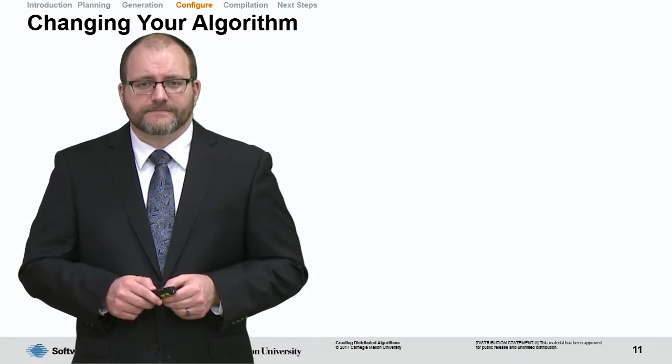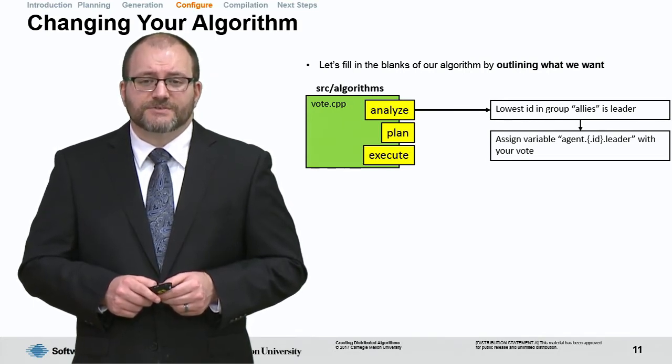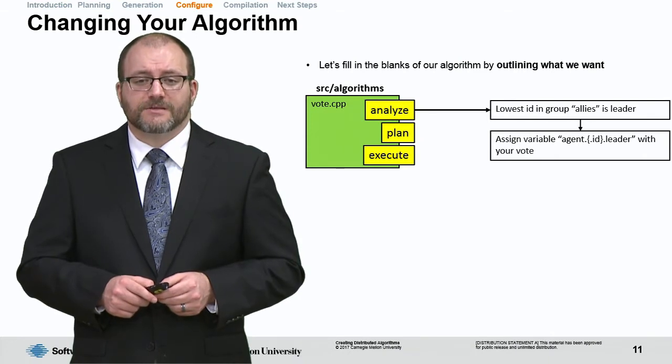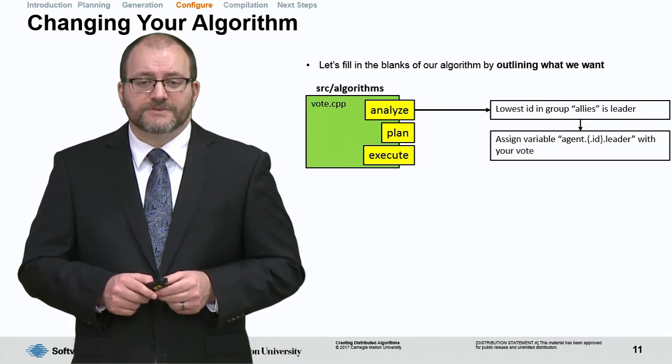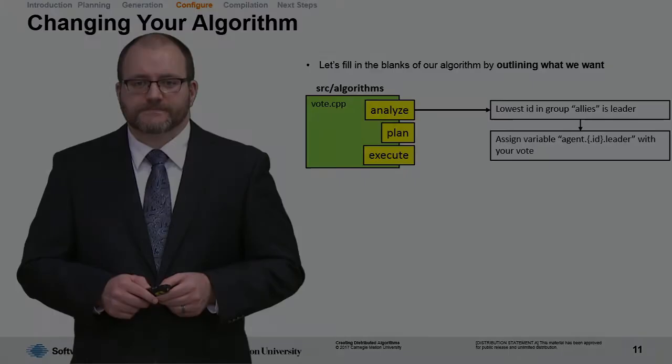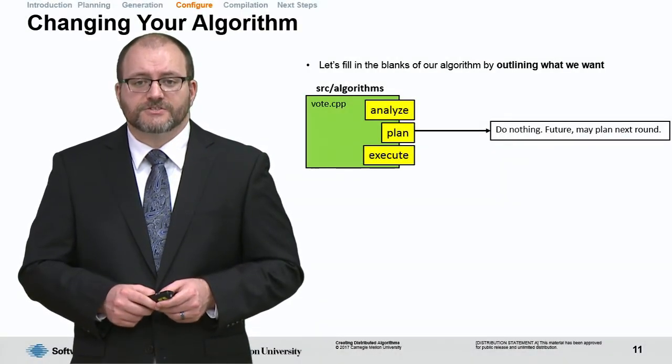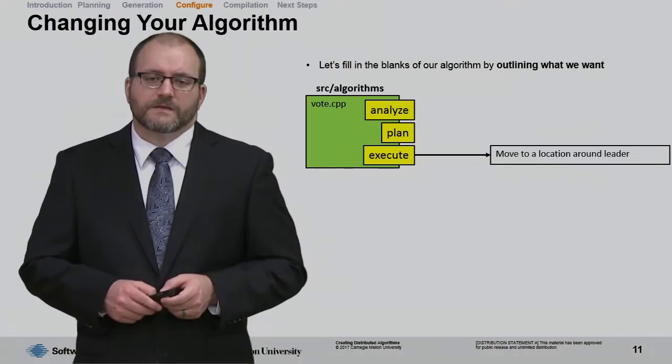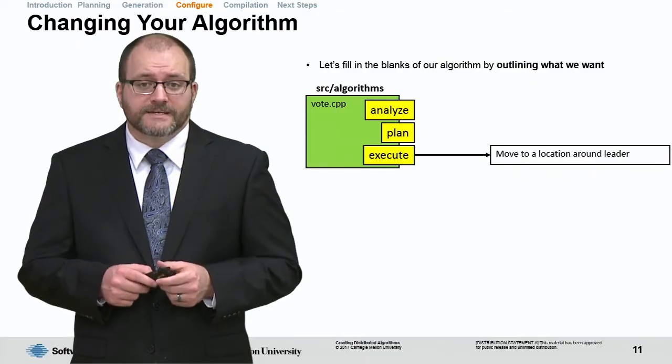Now that we've planned our algorithm and generated the skeleton scaffolding for our algorithm, let's go ahead and implement it. In the analyze method, we're going to look inside of our group allies for the leader. Essentially, the person with the lowest ID is going to be the leader. We're going to assign a variable agent.whatever our own ID is.leader to the person we vote for, the agent we vote for, to be the leader of our formation. We're not going to do anything special in the plan method. Instead, we're just going to use the function that gpc generated for us. In the execute function, we're going to move to a location around the leader based on our own ID.